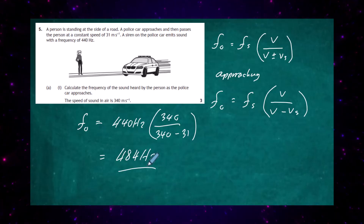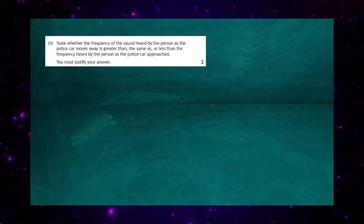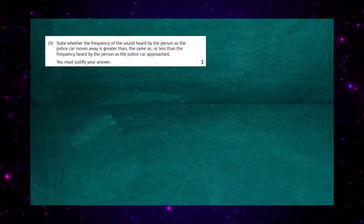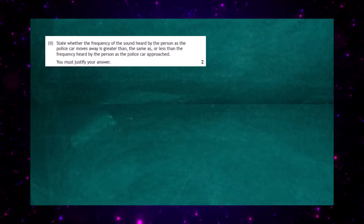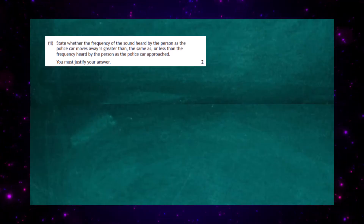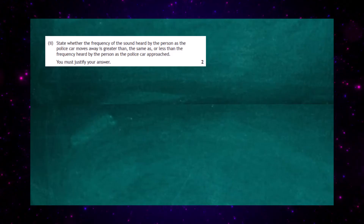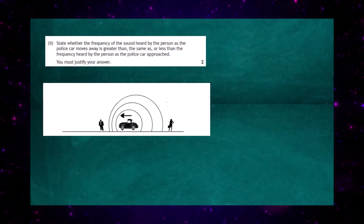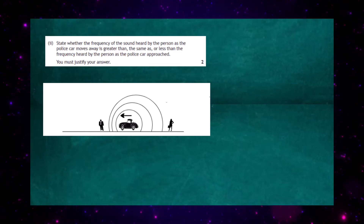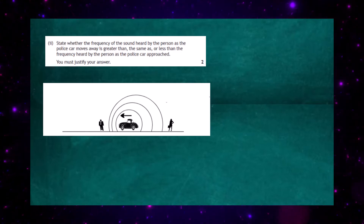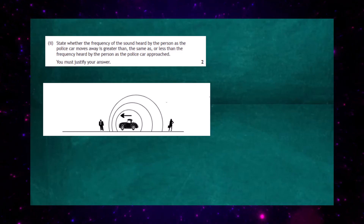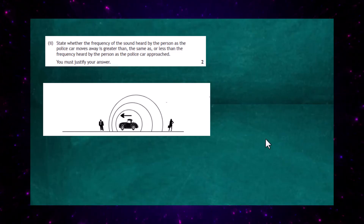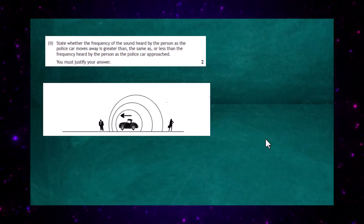Question 5a Part 2: state whether the frequency of the sound heard by the person as the police car moves away is greater than, the same as, or less than the frequency heard as the police car approached — for two marks, with justification. Referring to the Doppler effect diagram: as the car was approaching, the waves are compressed, so the observer hears a higher frequency. But as the car moves away, the waves are spread out behind the car, so the person hears a lower frequency.